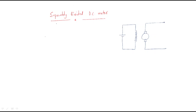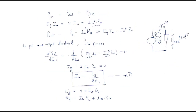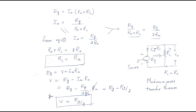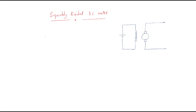Hello everyone. In this session we will discuss the separately excited DC motor. In the last session we discussed the separately excited DC generator. Generally, for normal motor operation, any DC motor should take some electrical input and give some mechanical output. So it will take the electrical input from this side — we are giving supply from here, this is the voltage, and it will supply the current, which is Ia.